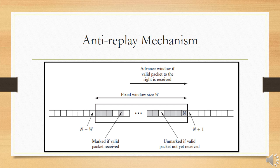Inbound processing proceeds as follows when a packet is received. If the received packet falls within the window and is new, the MAC is checked; if authenticated, the corresponding slot in the window is marked. If the received packet is to the right of the window and is new, the MAC is checked; if authenticated, the window is advanced so that this sequence number becomes the right edge of the window and the corresponding slot is marked. If the received packet is to the left of the window, or if authentication fails, the packet is discarded. This is an auditable event.